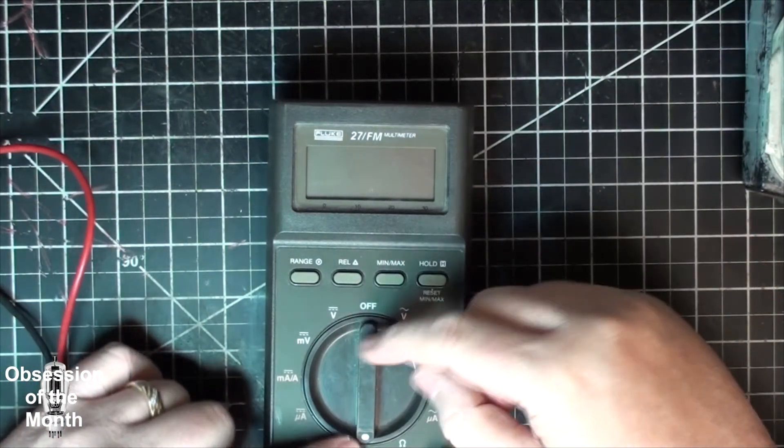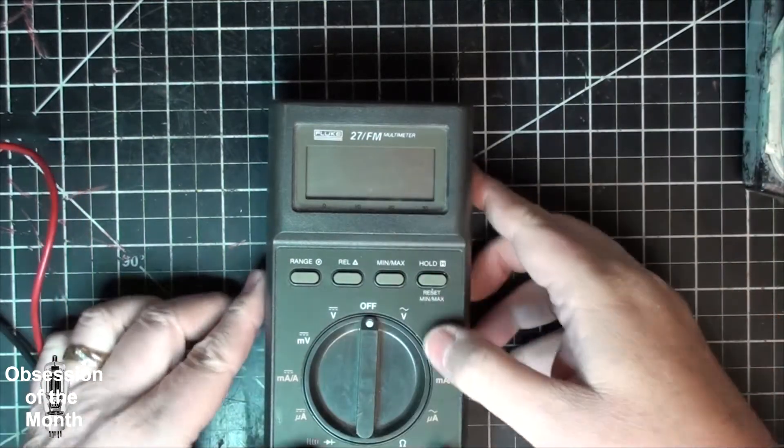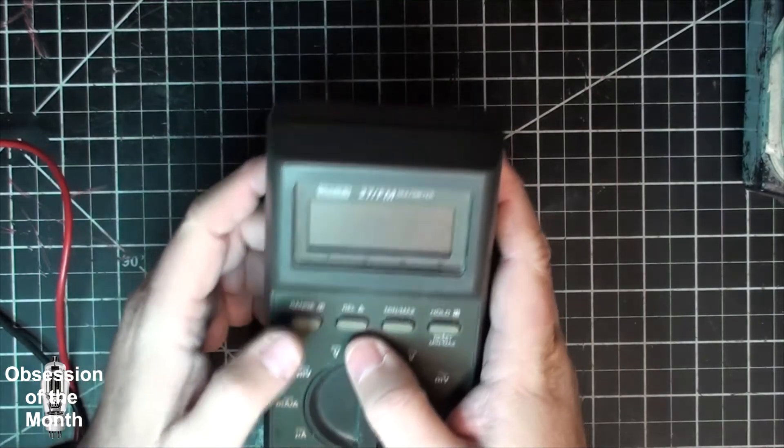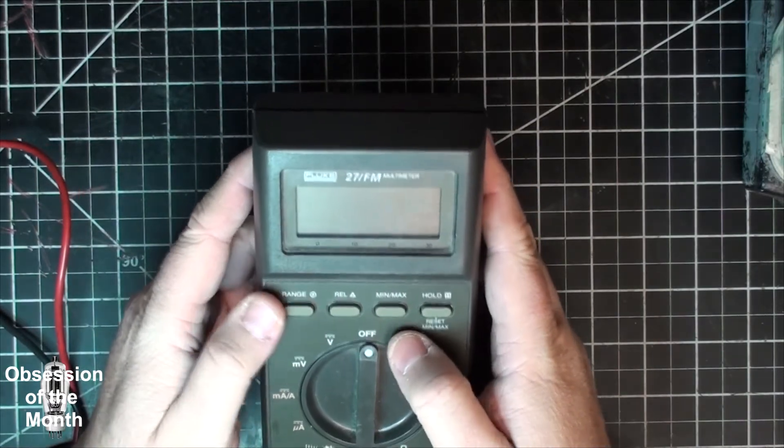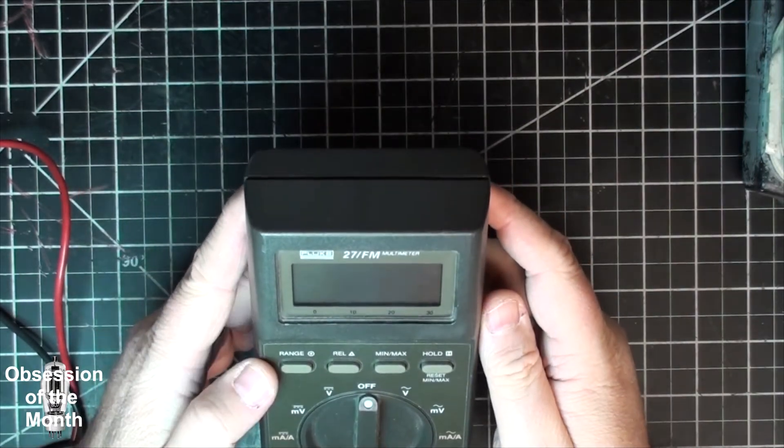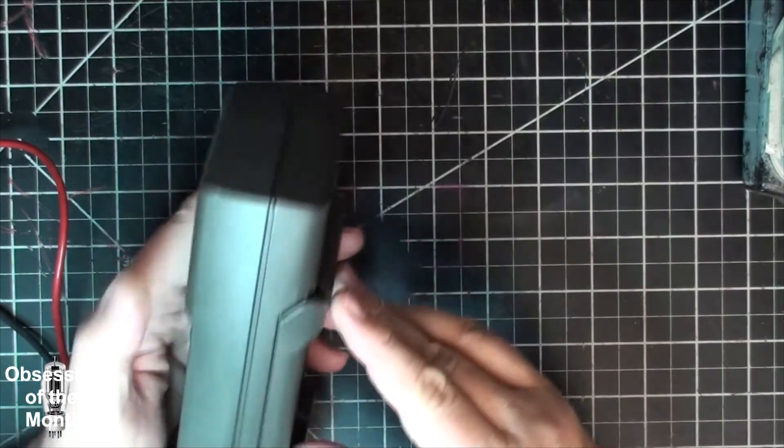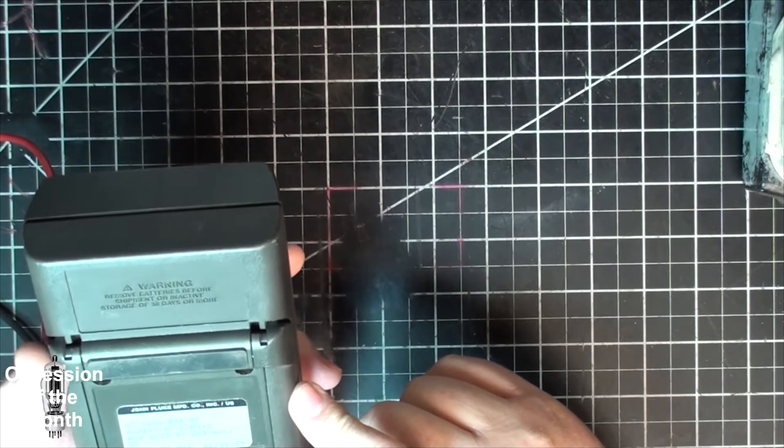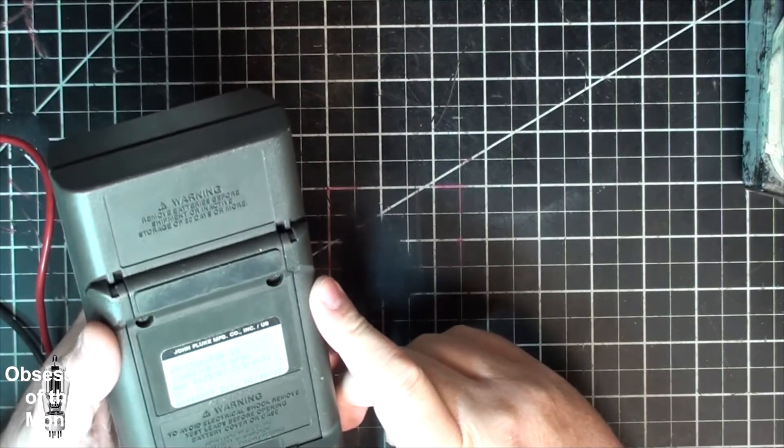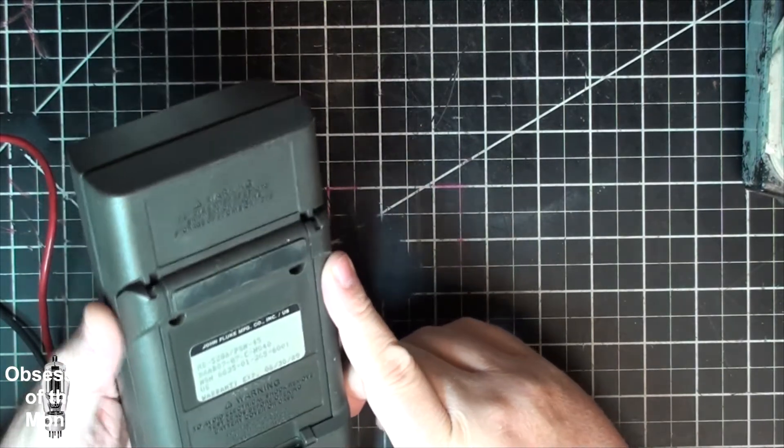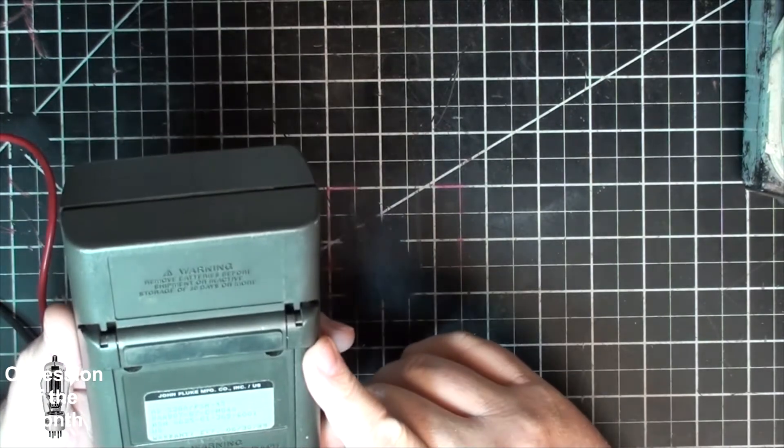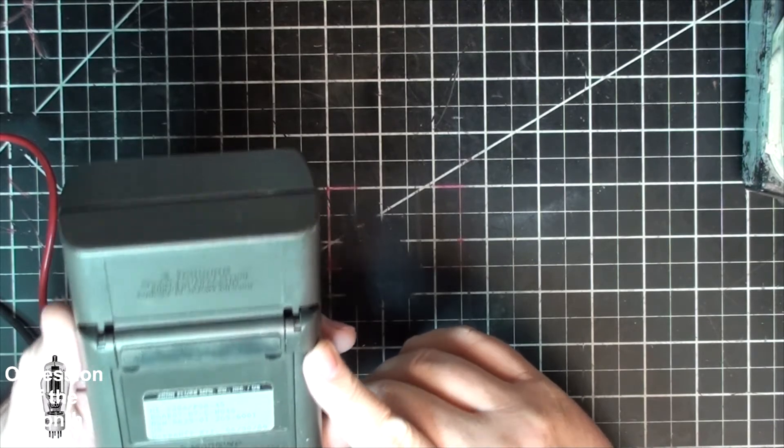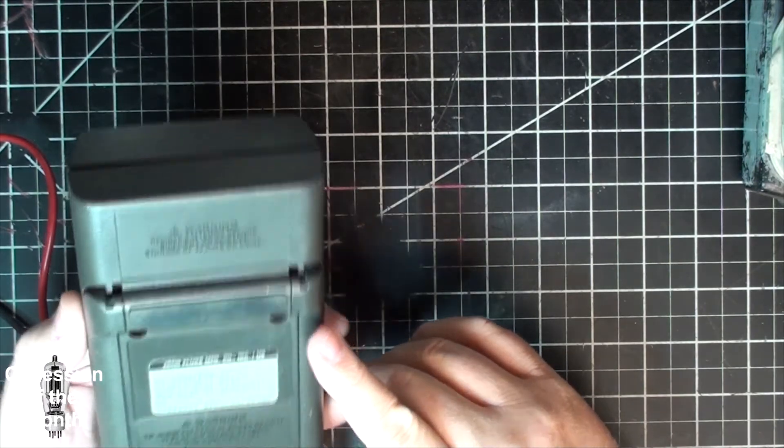Diode check, two different offs, one here, one here. Hold, min, max, relative, and a manual range. Like I said, I've had this for three or four years now. Well, let's see, I'm not sure when I got it, but yeah, at least probably five years.